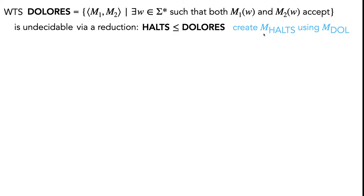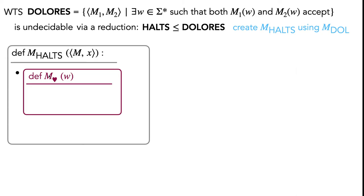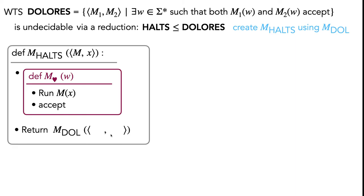Our goal is to create a decider mHALTS, which takes in the encoding of a Turing machine and its input. In our construction of mHALTS, we're going to define our own new Turing machine — let's call it mHard — which takes in an input string w. The construction of mHard is to run m on x and then accept. At the very end, we return mDole with mHard and mHard again as our two inputs.